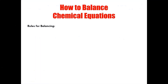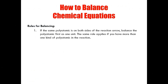Several different methods for balancing chemical equations have been created over the years. I personally have found none of these methods useful, so I have created my own set of balancing rules. There are four rules in total. The first: if the same polyatomic is on both sides of the reaction arrow, balance the polyatomic first as one unit.